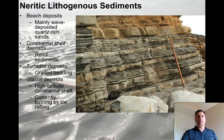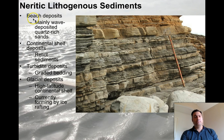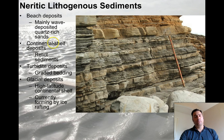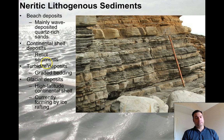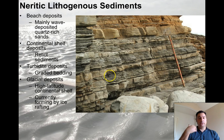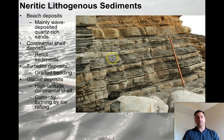In the neritic zone, the main thing we think about are beach deposits — mainly wave-deposited quartz-rich sands. We also get continental shelf deposits — relic sediments that were maybe deposited along the beach but have slowly been pulled out onto the shelf. Turbidite deposits show graded bedding — various grain sizes within each turbidite, with sequences where you get a sandstone capped with shales and silts, then another sandstone, repeating over and over. These are turbidite deposits.